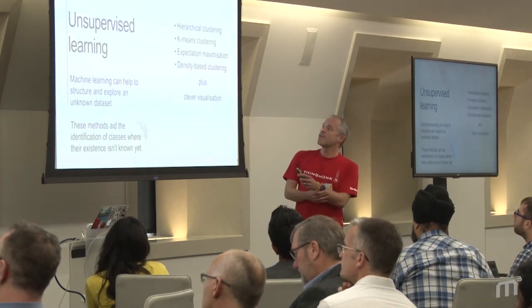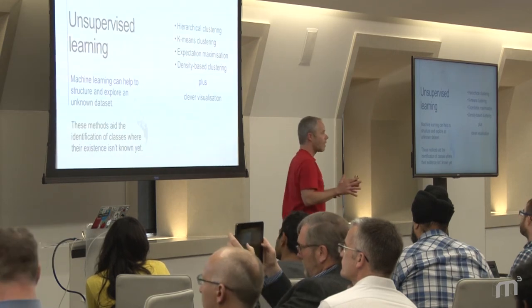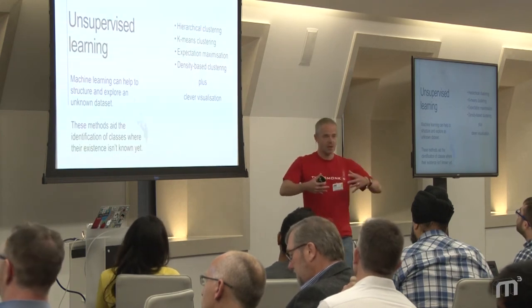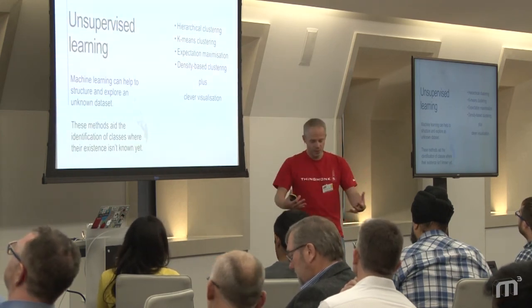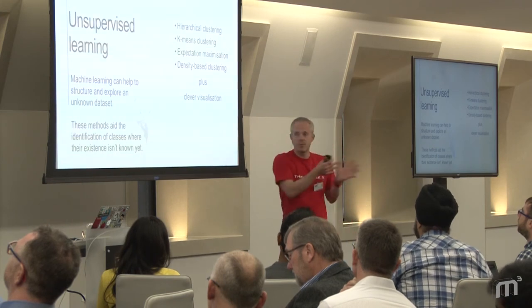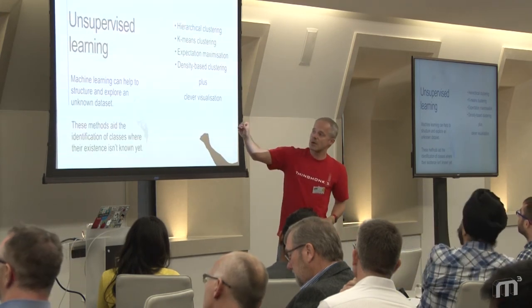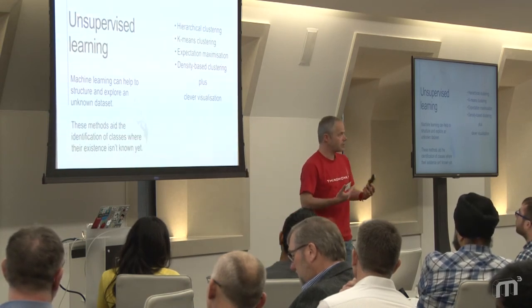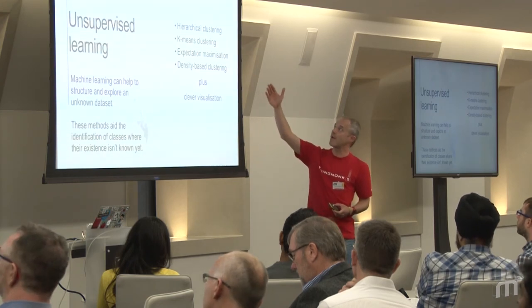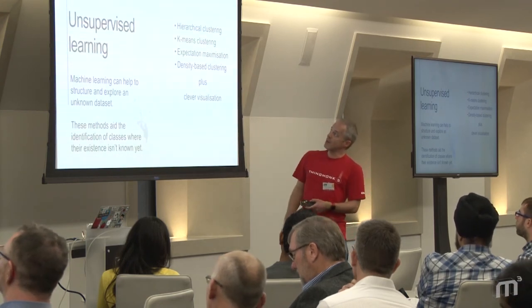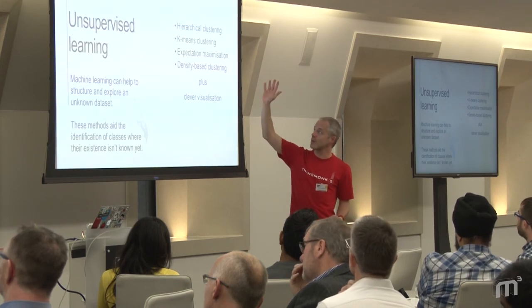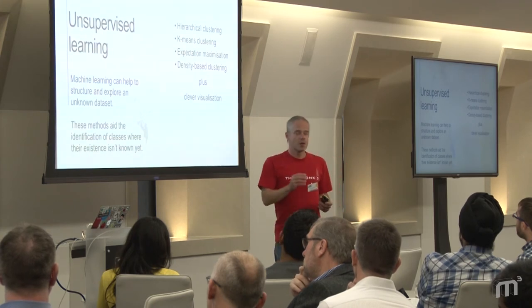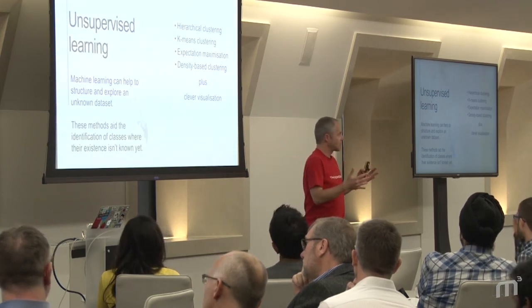We'll quickly go through unsupervised learning. Everything I've shown so far is supervised learning — we show the computer a relationship between input and output before we get to work. Unsupervised learning is used to explore data you or the computer hasn't seen before. There are different methods: hierarchical clustering, k-means clustering, expectation maximization, and density-based clustering. They're usually combined with clever visualization so you get a notion of what's actually going on inside your dataset.